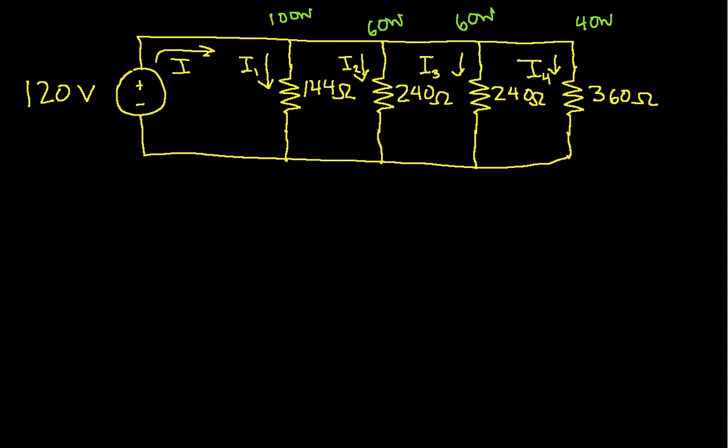Okay, and I want to find out what the total current is. So I can write down KCL, which says that the current flowing into the node is equal to I1 plus I2 plus I3 plus I4. The currents flowing out of the node.